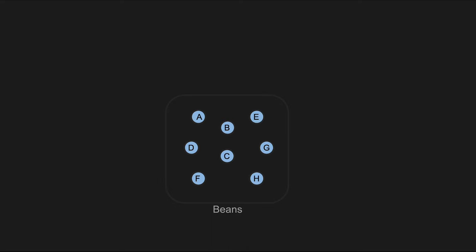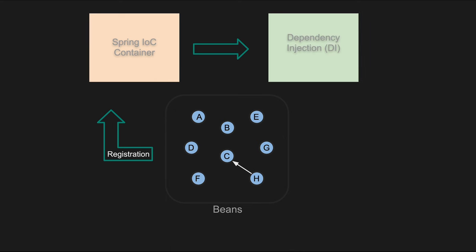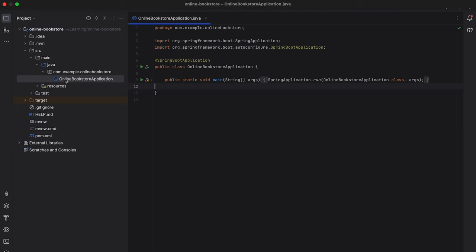Assuming we have a set of beans and one bean has a dependency on another: beans are registered in the IoC container when the application starts, and once beans are registered, Spring uses dependency injection to wire them together. This means that dependencies required by a bean are injected into it by the container. When you use dependency injection in Spring, you typically don't need to declare which type of IoC container to use explicitly — Spring automatically manages the creation and injection of dependencies using its ApplicationContext.